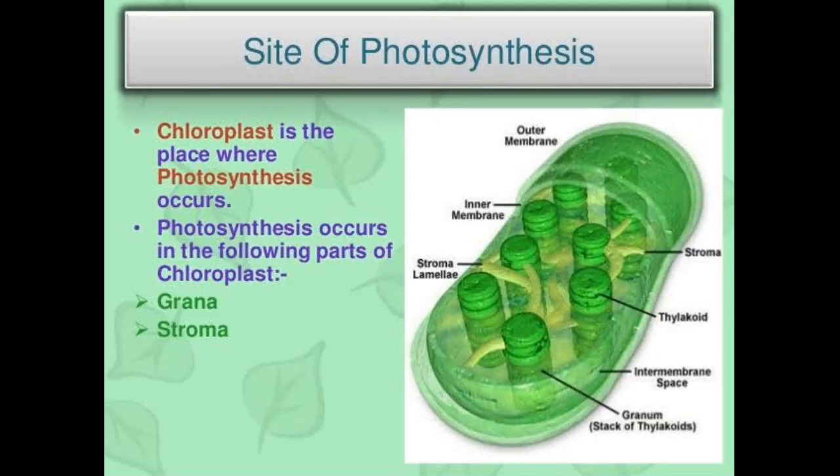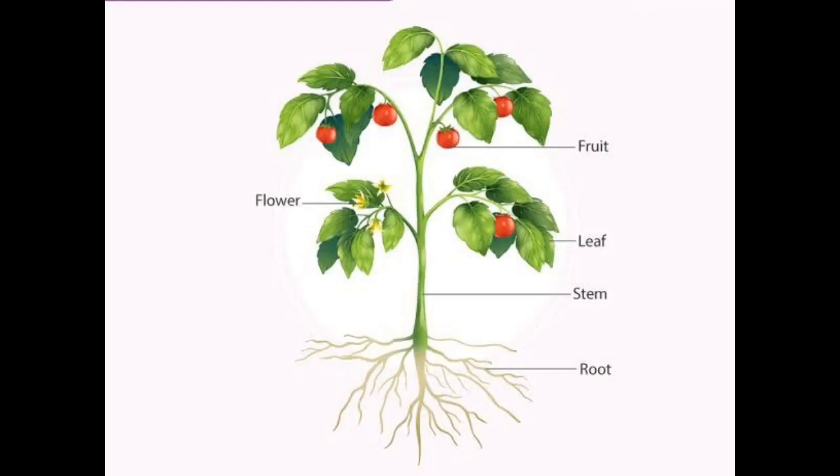The chloroplast is the place where photosynthesis occurs. Photosynthesis occurs in the following parts of the chloroplast: the grana and the stroma. The beside photo shows the parts of a chloroplast involved in photosynthesis. In this picture we can also see the green plants and their parts.